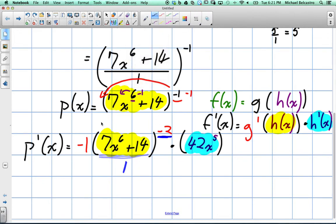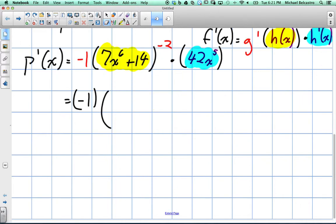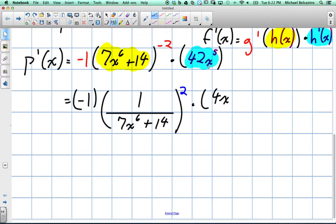So we'll do it one step at a time. The negative 1 still stays. It should be 1 over, because I'm going to invert the power, 7x to the power of 6 plus 14. And now this exponent can be written as, I'll write in blue so you can see, it's positive 2, so I've inverted what's inside.